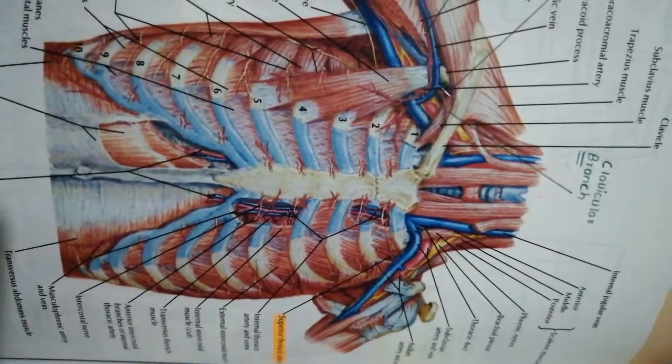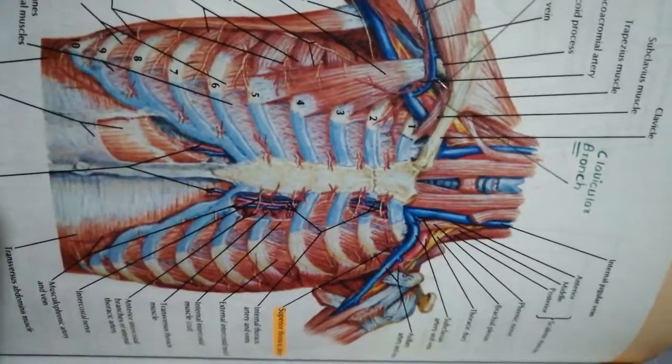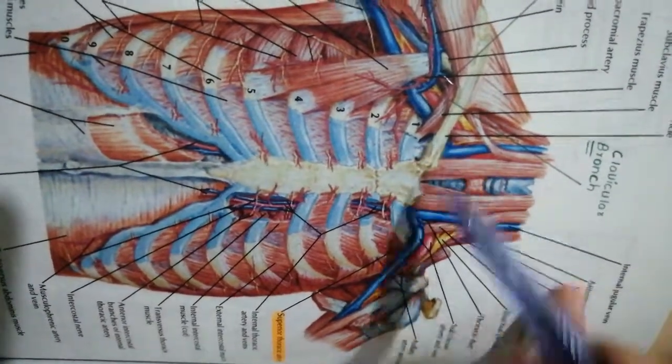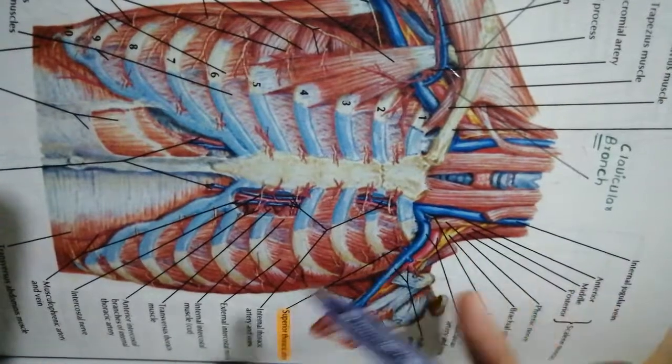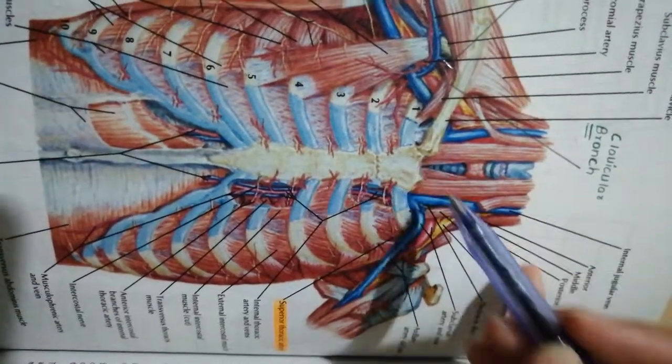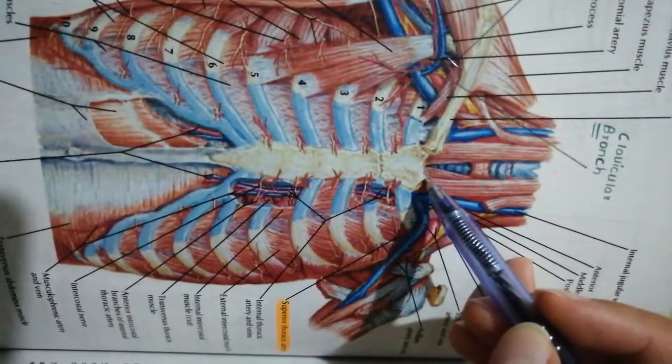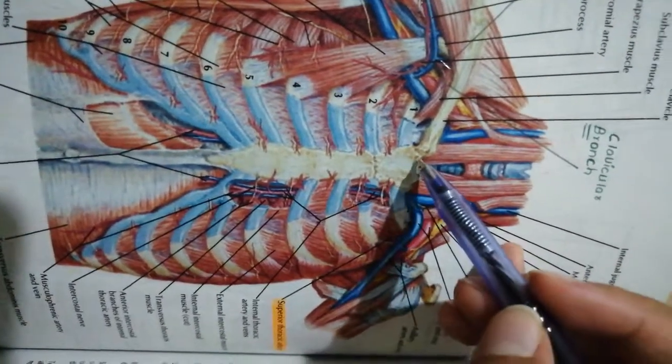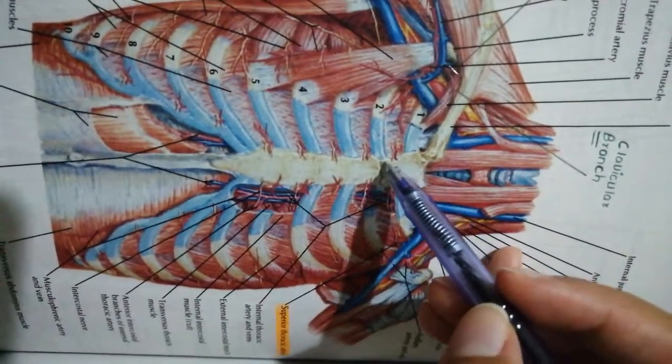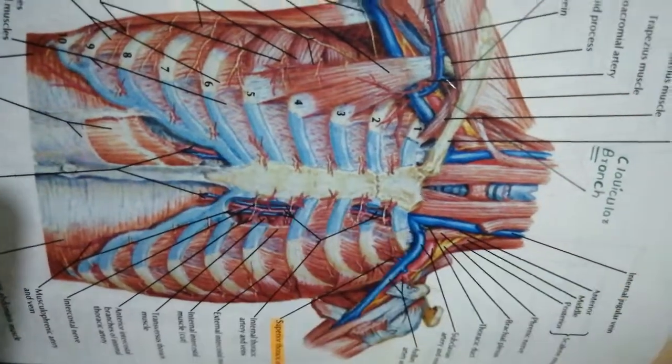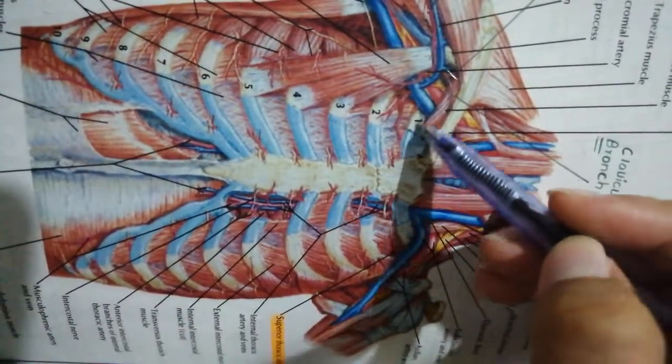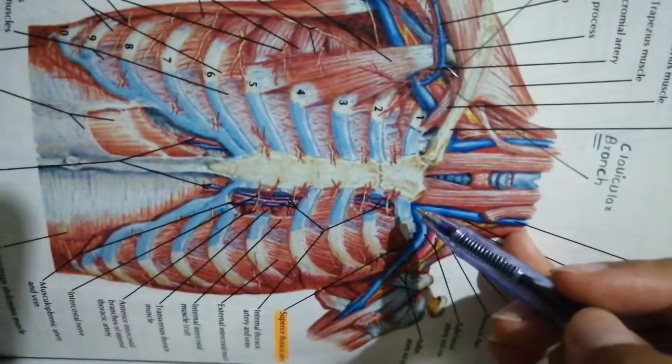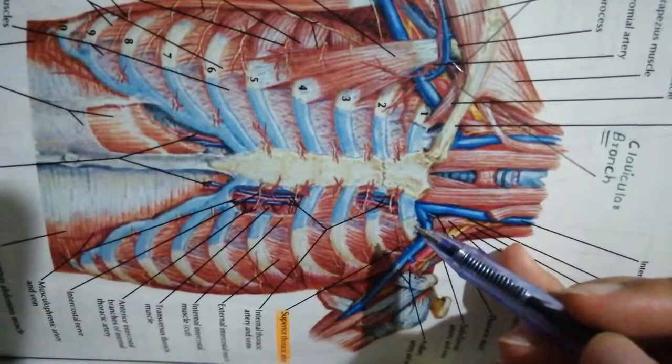Let's talk about the superior thoracic inlet, starting with the boundaries. We have an anterior boundary, lateral boundary, and posterior boundary. The anterior border is formed by the superior or upper border of the manubrium sternum, the first component of the sternum. The lateral boundary is formed by the first rib and its costal cartilage, whereas the posterior boundary is formed by the superior surface of the first thoracic vertebra.